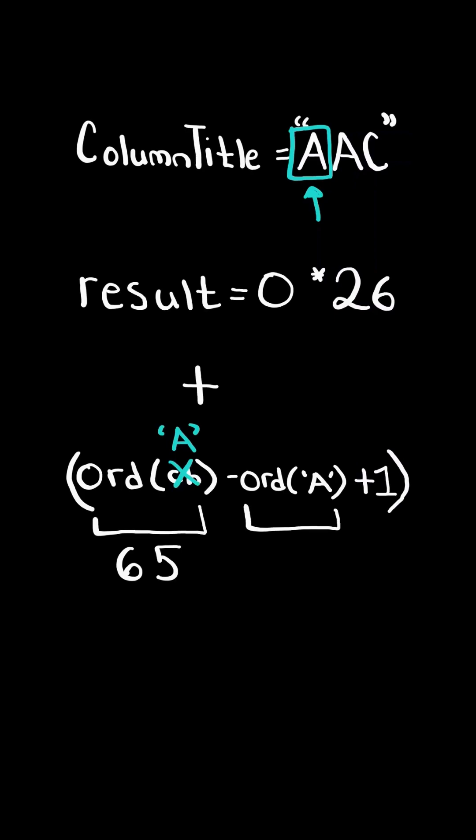We then subtract it from the starting letter of the alphabet, which happens to be A, which has decimal value 65, and we add 1 because the column title starts counting at 1. Adding these two expressions together gives us 1, and then we update result with the new value, and we continue.